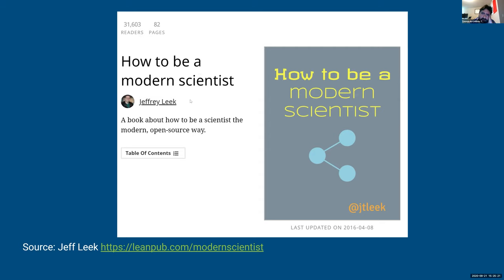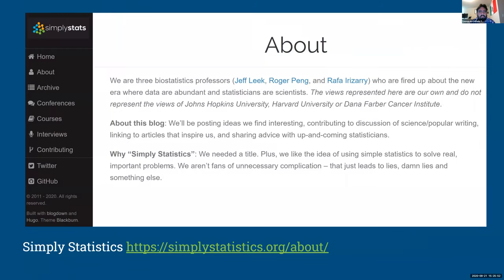This is a book where Jeff compiled ideas from himself and other people over the years about how to be a scientist in an open source way. You already know that we make a lot of our code public through GitHub. But we've never actually explained the framework — this book will go over that.